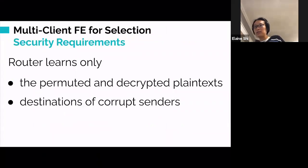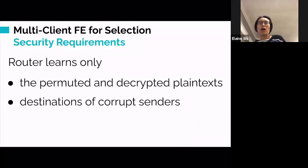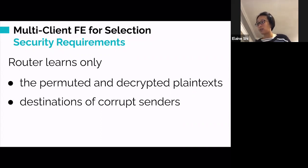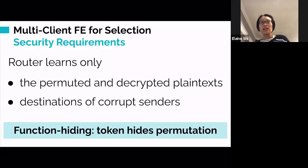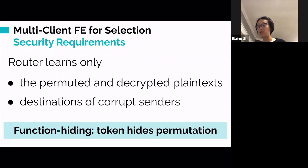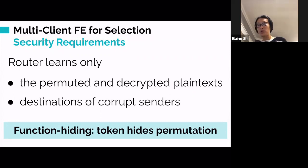Now let's look at the security requirements. Informally, we want the router to learn only the permuted and decrypted plaintexts, and if some senders are corrupt, the router can also learn those corrupt senders' destinations. But beyond this, the router should not learn anything else — in particular, the router cannot learn the communication pattern between honest senders and honest receivers. Another way to say this is that the scheme must be function hiding: each token should hide the coordinate it is selecting, and the collection of all n tokens should hide the permutation. Note that if we don't require this function hiding property, the scheme would be trivial because the only non-trivial thing we are protecting is the routing permutation itself.